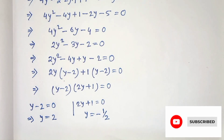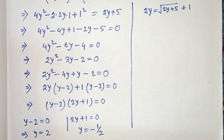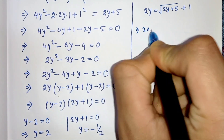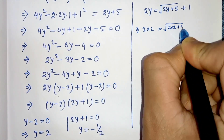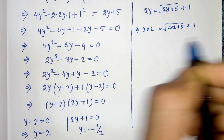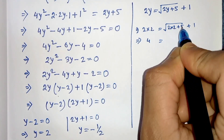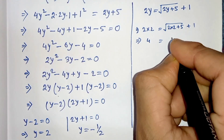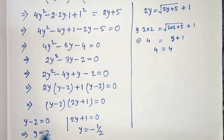Now let's verify these values. Putting y equals 2: the left hand side gives 2 times 2 equals 4. The right hand side gives root under (2 times 2 plus 5) plus 1, which is root 9 plus 1, equals 3 plus 1 equals 4. So y equals 2 satisfies the equation and is a valid solution.